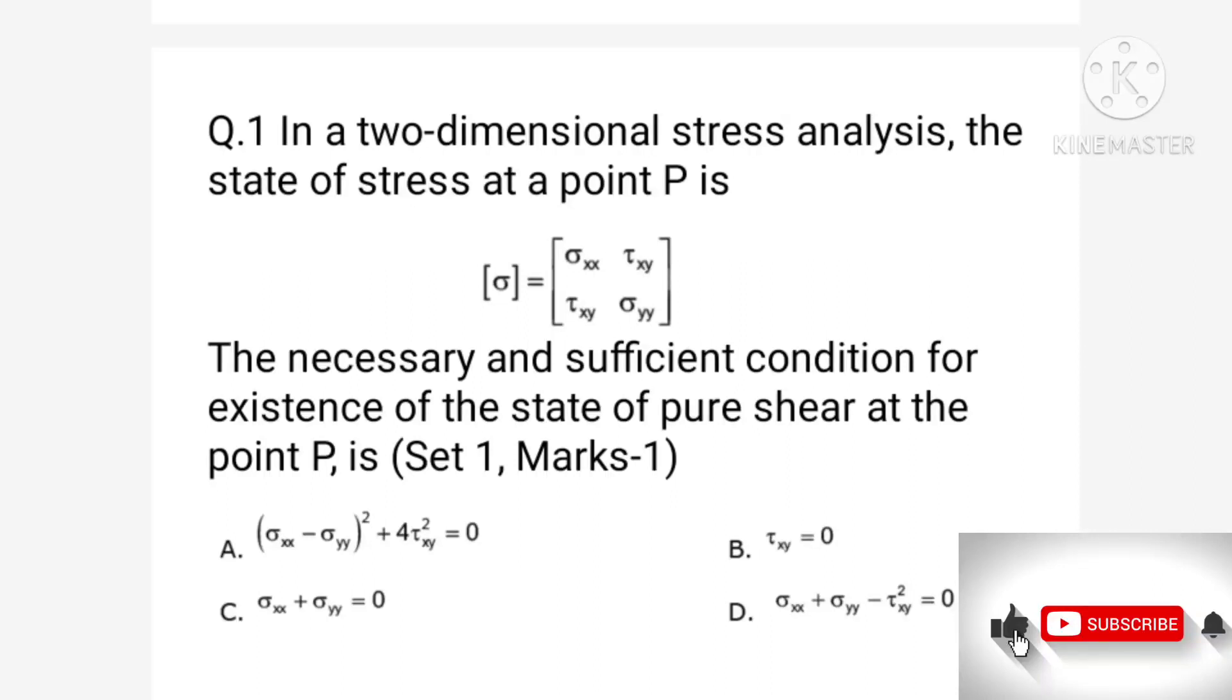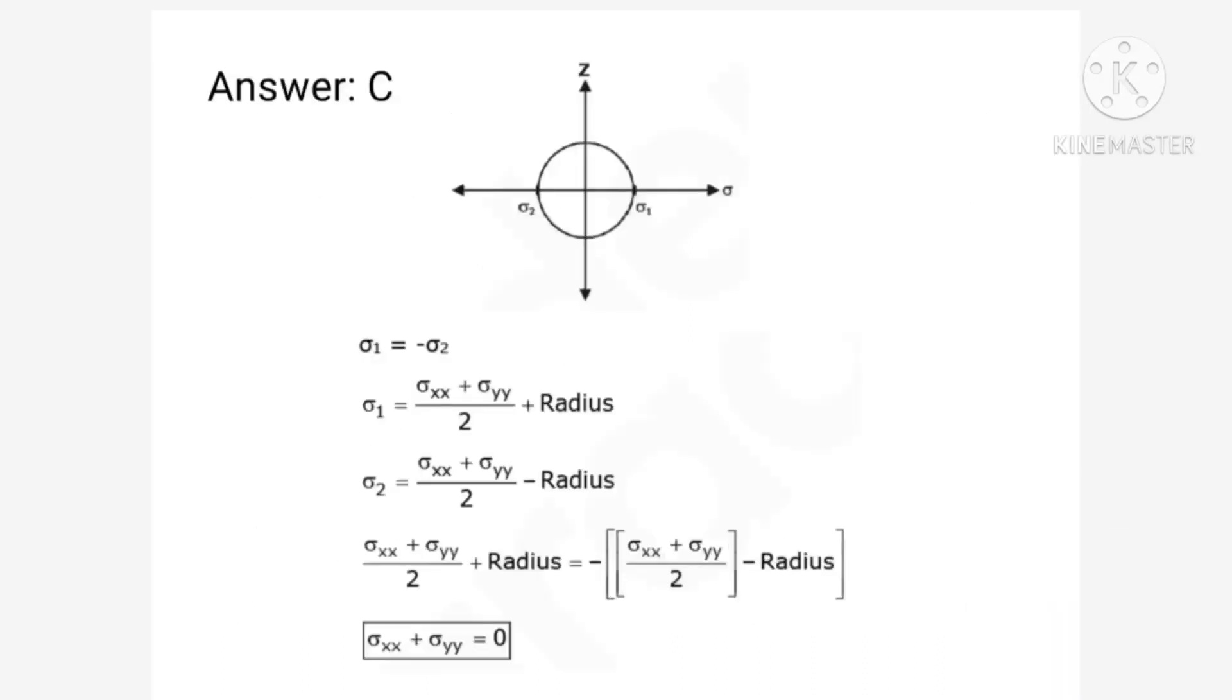So we have to solve this question using standard results for principal stresses. This is the question which has appeared for one mark in set one. So let us see the solution. This is the Mohr's circle for the given problem. Now here we can see sigma 1 is along positive x axis and sigma 2 is along negative x axis. Both are magnitude wise same but are opposite in nature. So sigma 1 is equal to minus sigma 2.